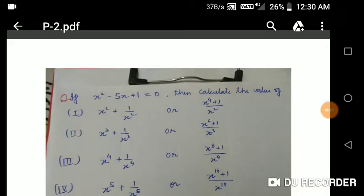We are going to see a polynomial problem. It is given as x² - 5x + 1 = 0, then we need to calculate x² + 1/x².